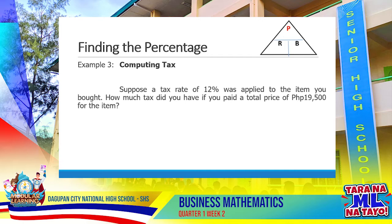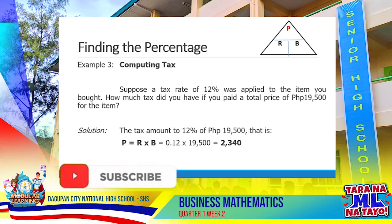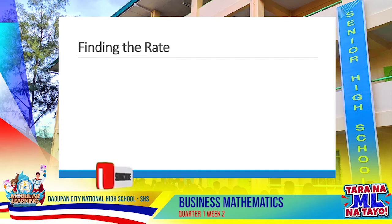Another example in computing tax. Suppose a tax rate of 12% was applied to an item you bought. How much tax did you pay if the total price of the item was 19,500? The tax amount is 12% of 19,500. Using the formula, we multiply 0.12 by 19,500, which equals 2,340.